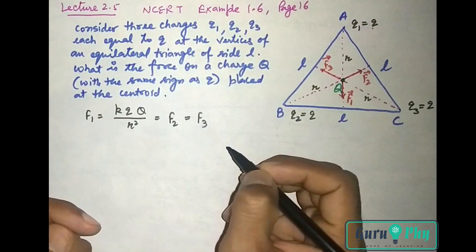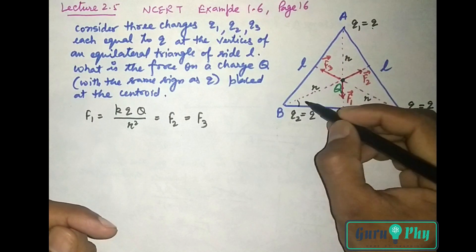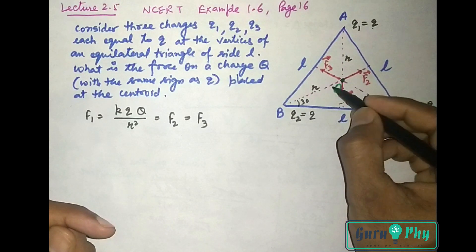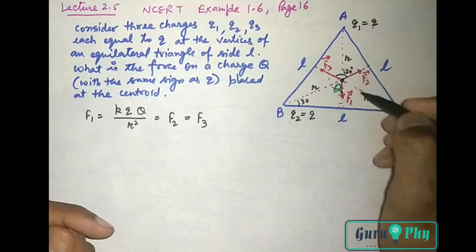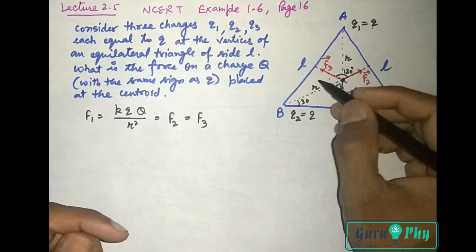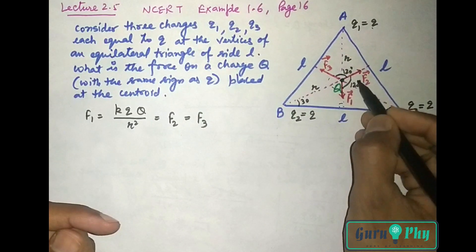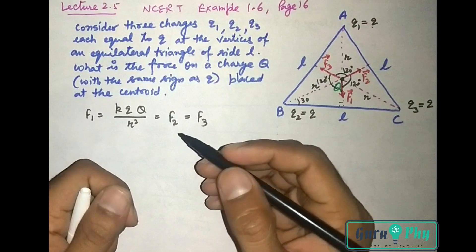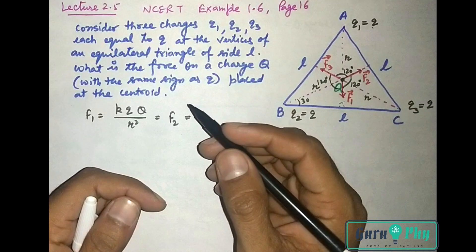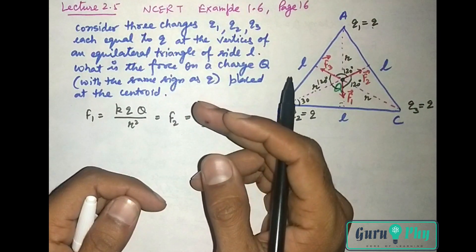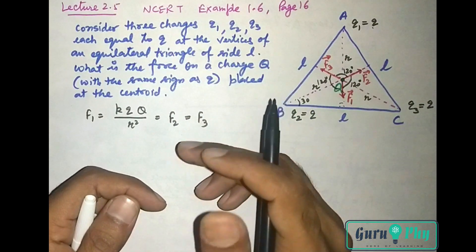तो तीनों force identical हैं। Result निकालने के लिए इन तीनों के बीच का angle देखेंगे। यह angle 30, यह 90, तो यह 60 और यह भी 60 — so each angle between any two consecutive forces is 120 degrees। तीनों force identical हैं और 120° पे लगे हुए हैं — यह भी 120°, और यह भी 120°। जब किसी particle पे बहुत सारे forces apply हो रखे हों, और सभी force magnitude में same हों, और दो consecutive forces के बीच का angle सभी के लिए same हो, तो जो net force होता है वो हमेशा 0 होता है।